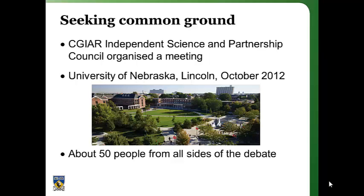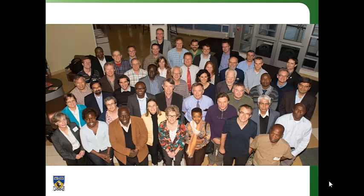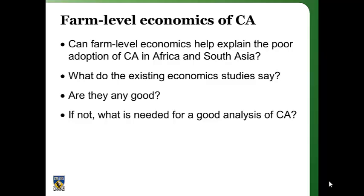Seeking some common ground, the CGIAR Independent Science and Partnership Council organised a meeting held at the University of Nebraska in Lincoln in October 2012. There were about 50 people from all sides of the debate. I was new to this area at the time and was invited to provide a review of the farm-level economics of conservation agriculture — asked to address questions like: can farm-level economics help explain the poor adoption of conservation agriculture in Africa and South Asia? What do the existing economics studies say, and are they of high quality?